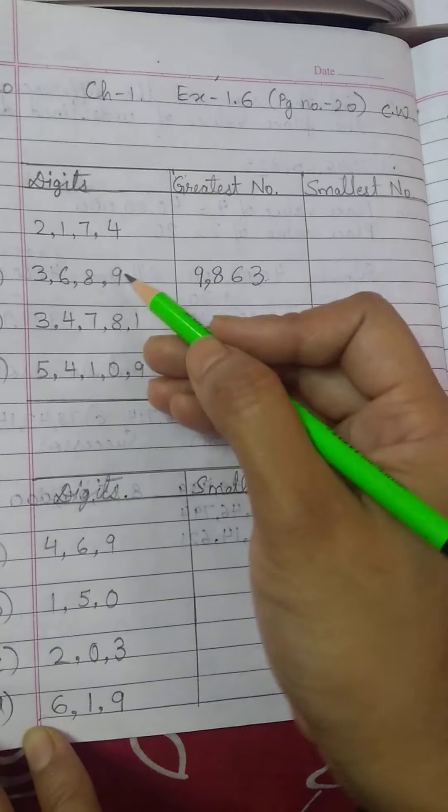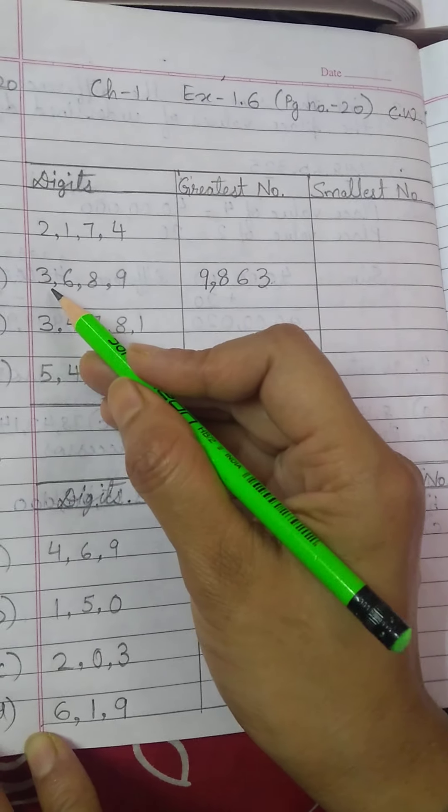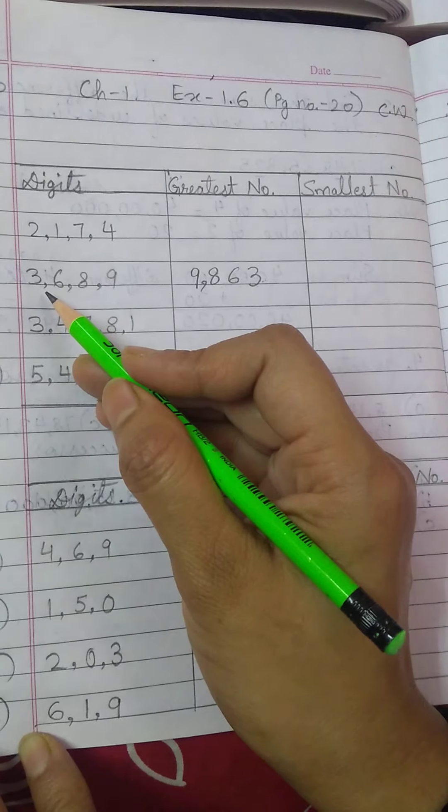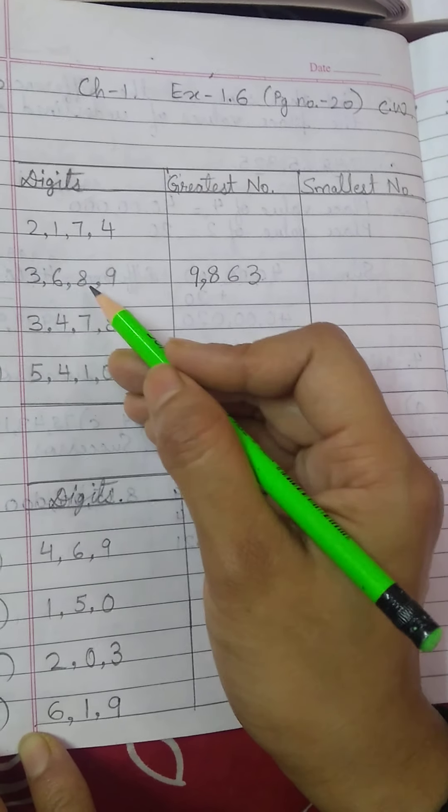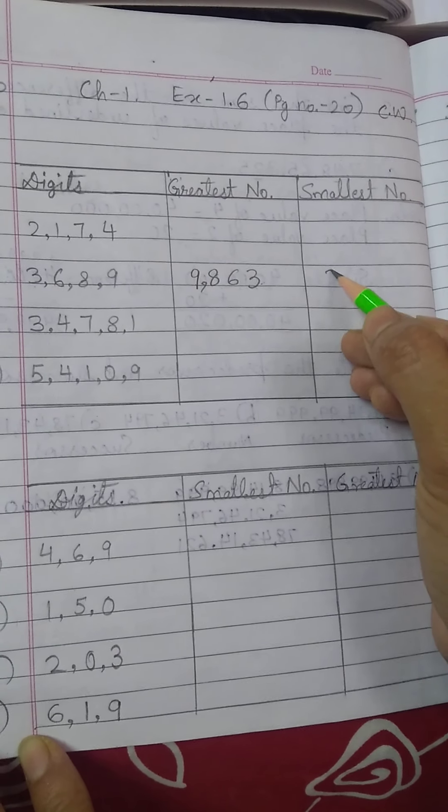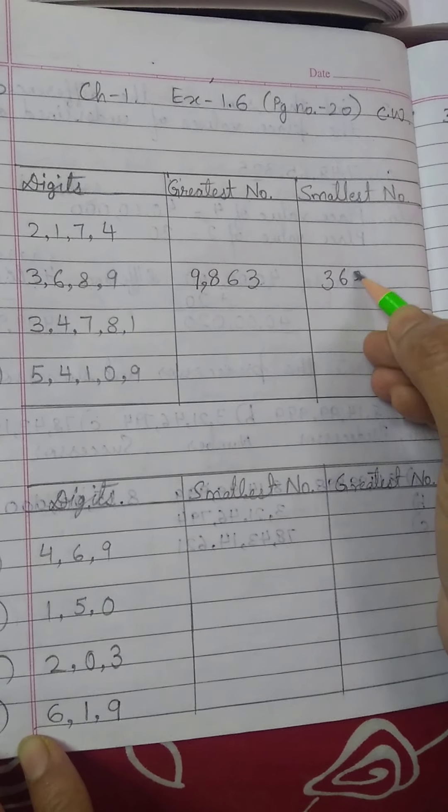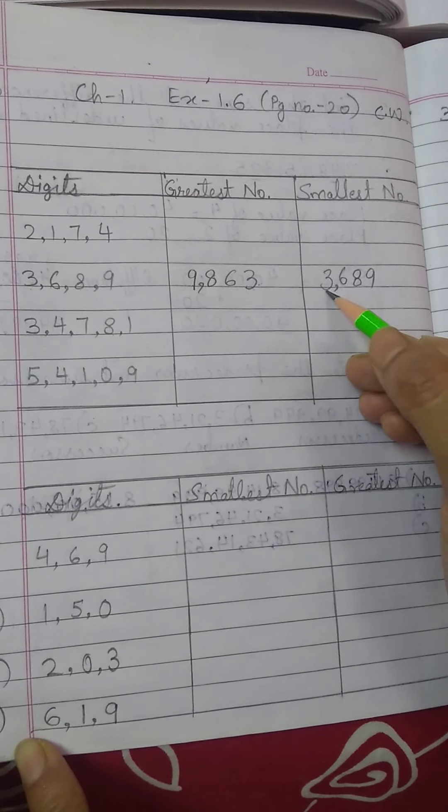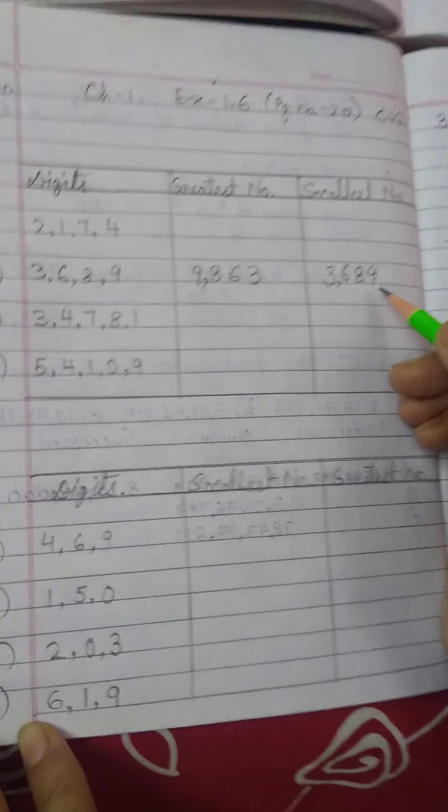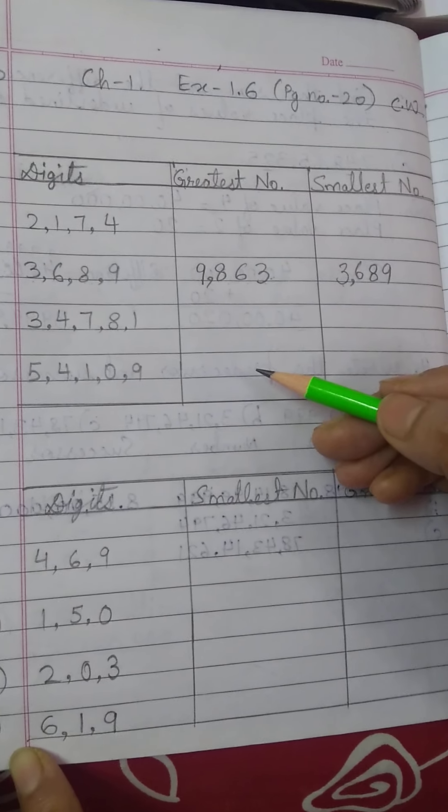Smallest number form karne ke liye, we have to arrange the given digits in ascending order, smaller to bigger. So, smallest se start karenge, 3, 6, 8, 9. So, we will write 3, 6, 8, 9. After writing the digits, put comma to make it a number, 3,689. Okay, students. Similarly, you will do rest of the parts.